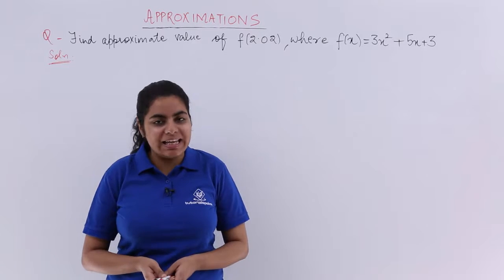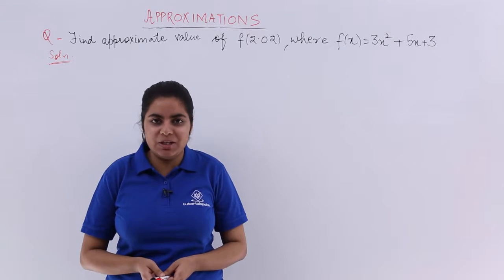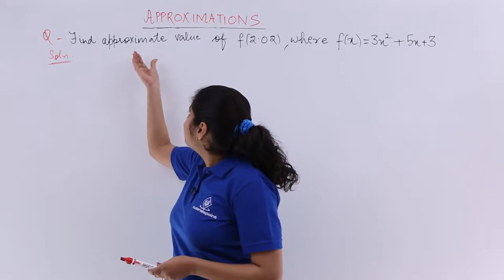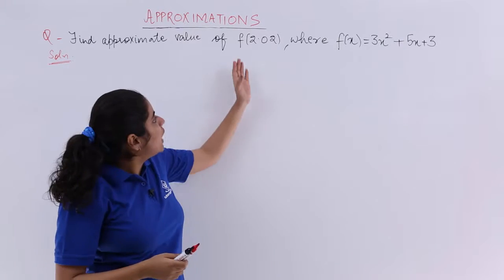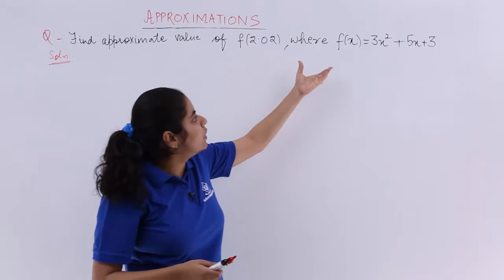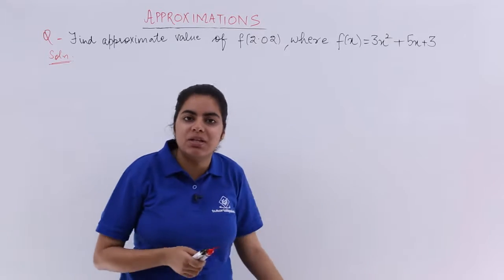In this video, let's see the next numerical problem based on approximations. It says, find approximate value of f(2.02) where f(x) = 3x² + 5x + 3.